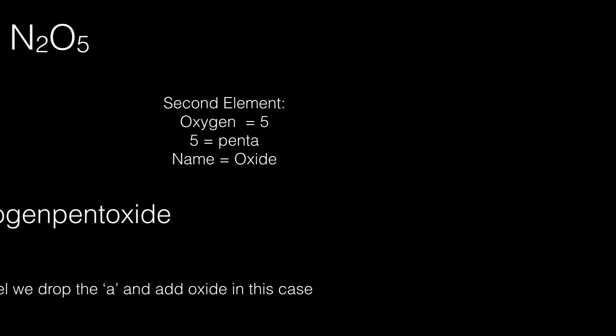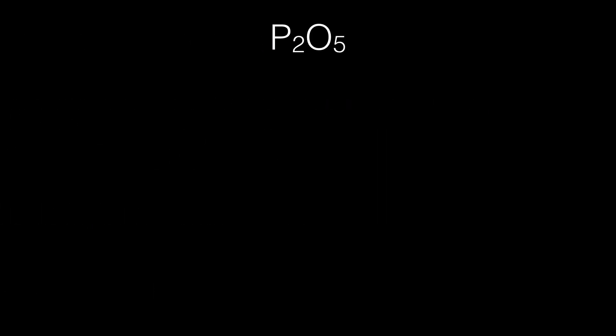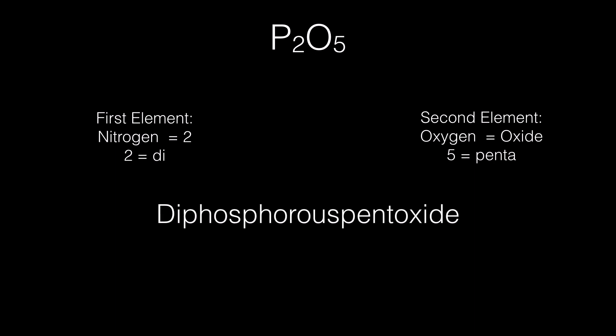Let's look at the next example. It's a compound formed between phosphorus and oxygen. We have two phosphorus, that indicates diphosphorus. Five oxygen, five is penta, and oxygen ends in oxide. So the final name of the compound would be diphosphorus pentoxide.